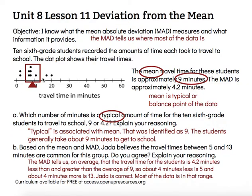Again, the objective says: I know what the mean absolute deviation measures and what information it provides. The mean absolute deviation, or MAD, tells us where most of the data is. Thanks for watching.